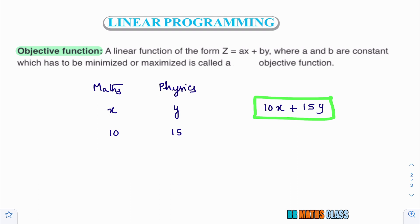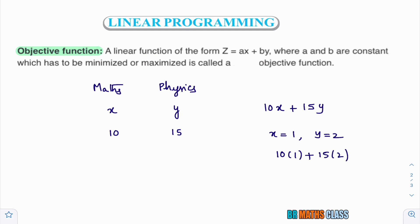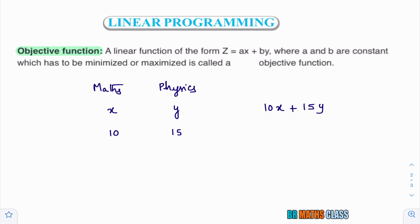With this linear function, we can calculate the profit after selling all the books. Suppose the shopkeeper sells one math book and two physics books. Then what is the profit he'll get? Substitute these values in the linear function: 10 × 1 + 15 × 2 = 10 + 30 = 40. So he'll get 40 rupees profit after selling one math book and two physics books. We can also calculate for what values of x and y this profit is maximum, and for what values of x and y this profit is very less.